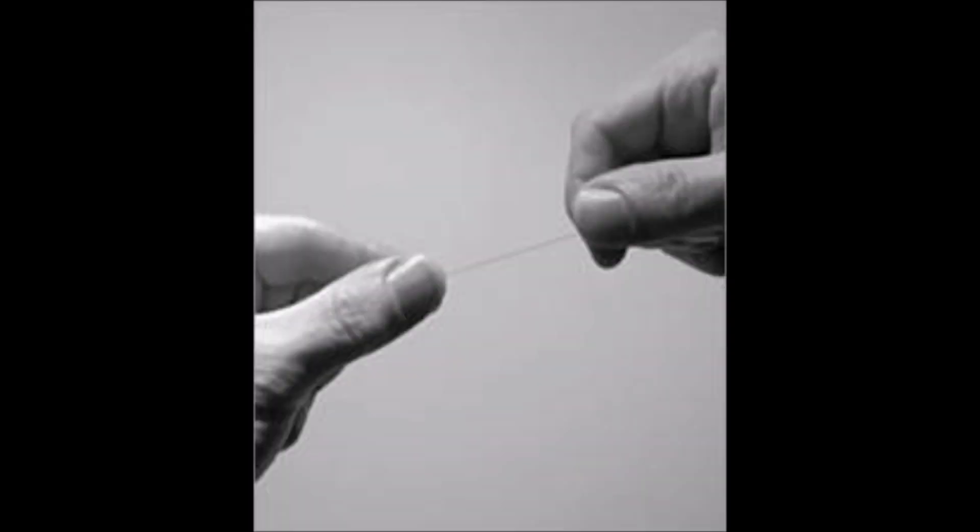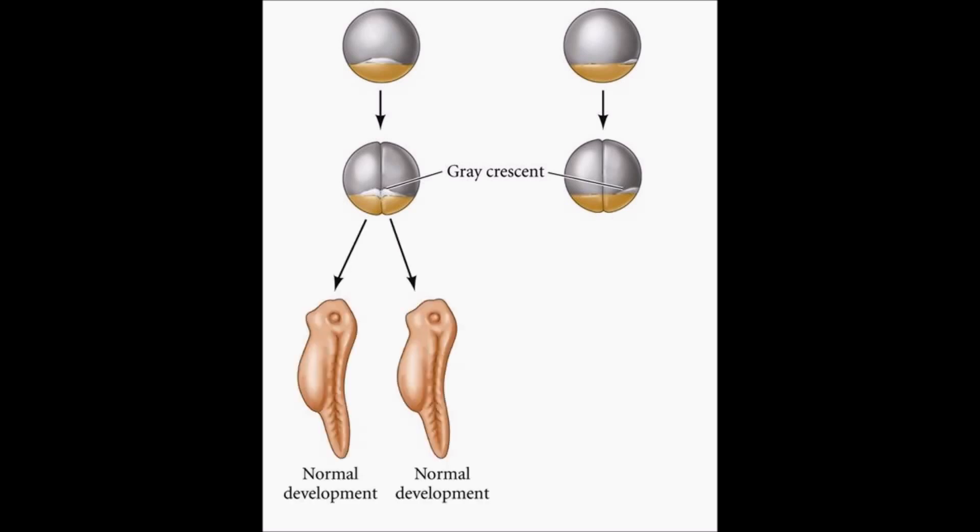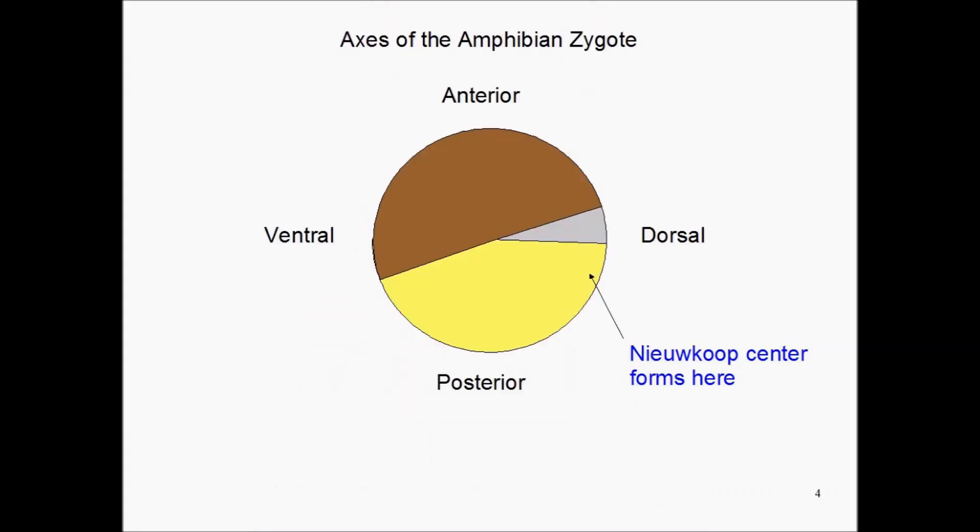One of these included tying a fine piece of hair around an embryo and dividing it into two. Some contained pieces of the gray crescent and some did not. The results showed that those that had a piece of the gray crescent developed normally, but they were just about half the size. Those without the gray crescent formed a belly piece without dorsal structure. This implies the presence of a signaling center, referred to as the Nieuwkoop center resulting from cortical rotation.